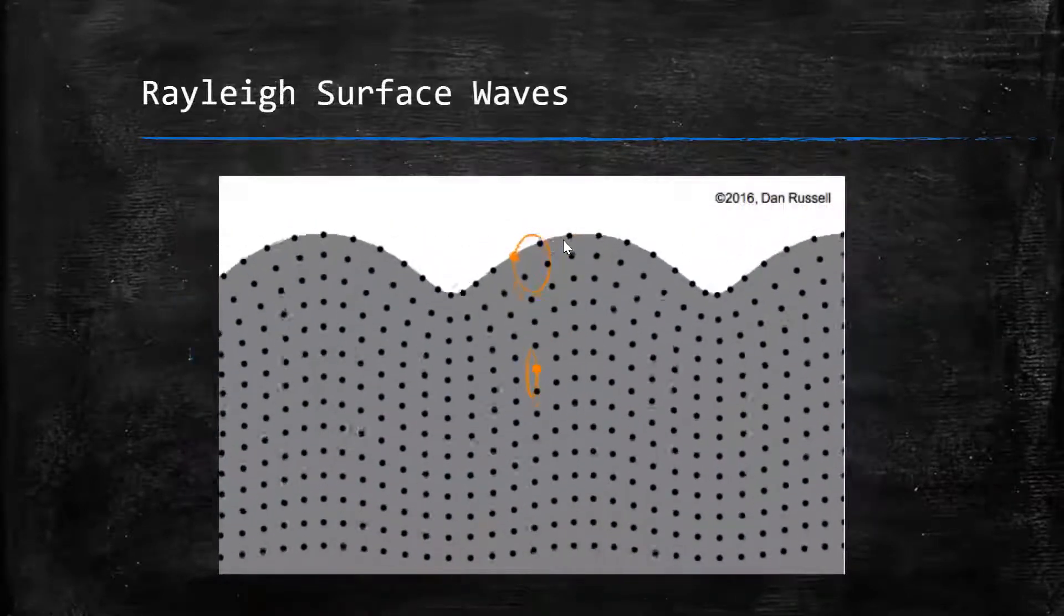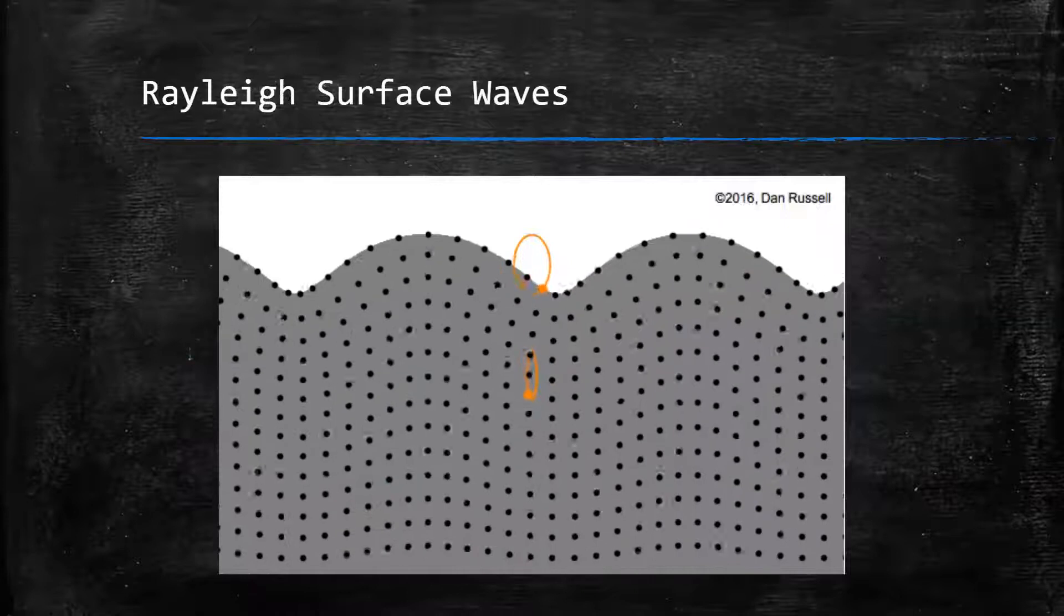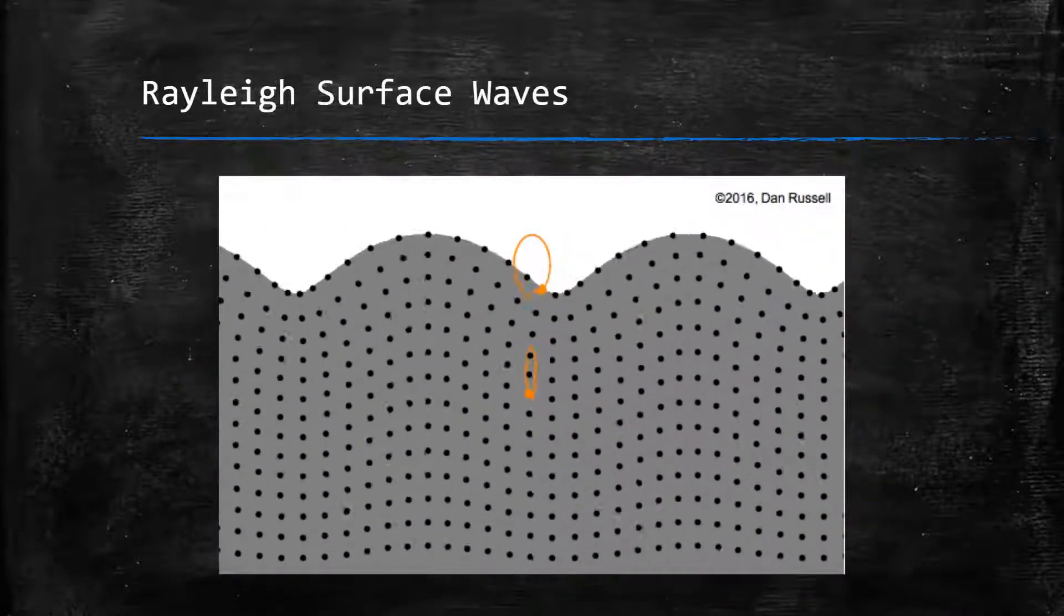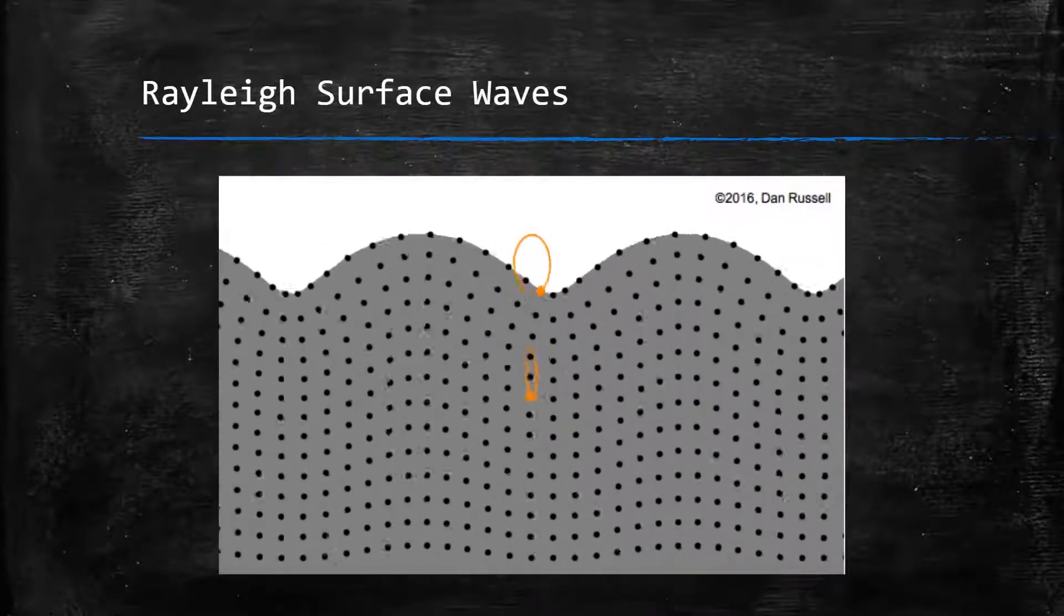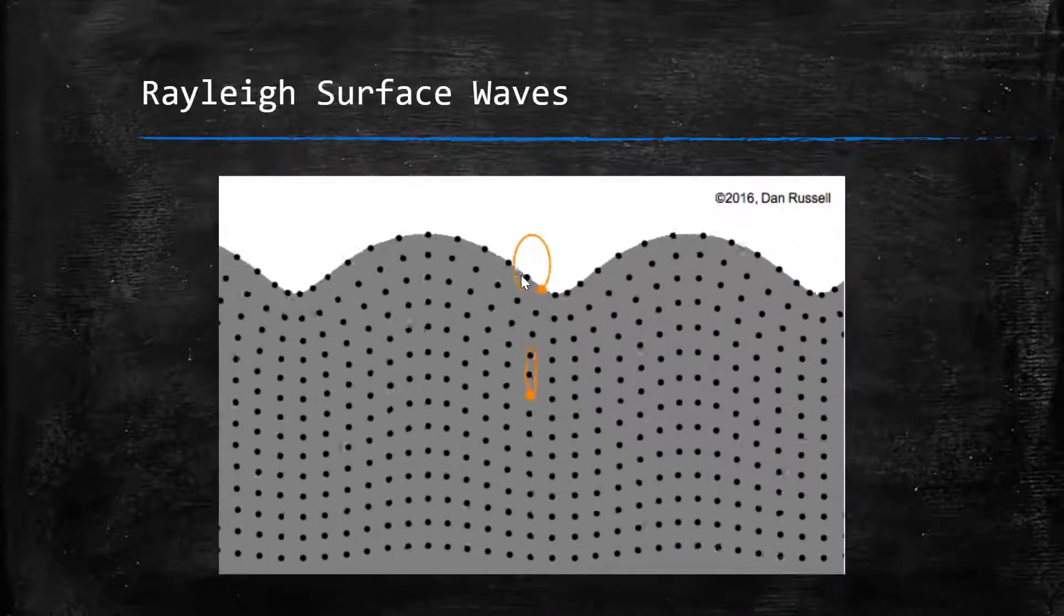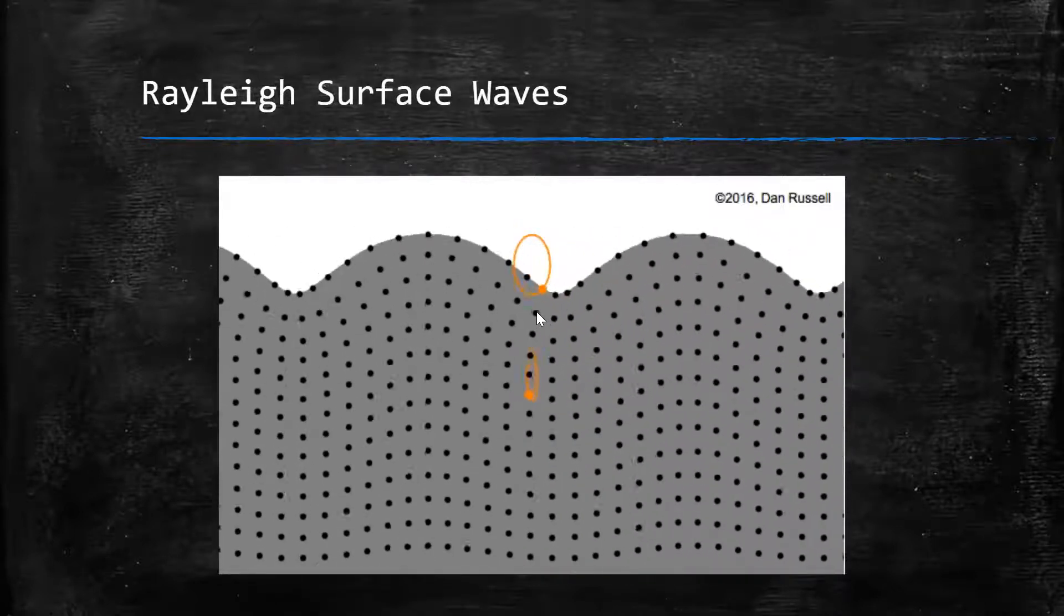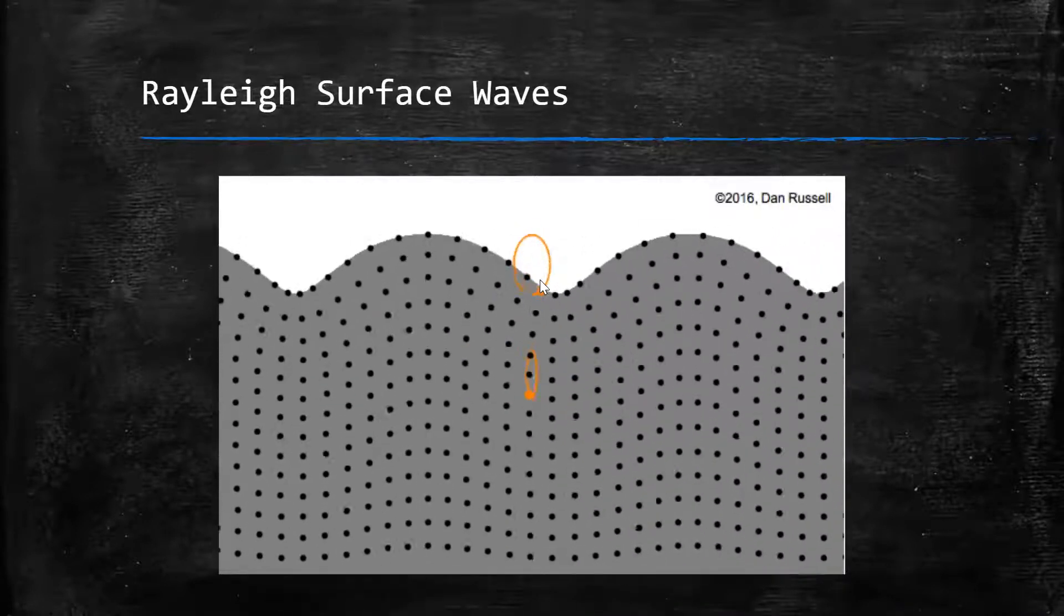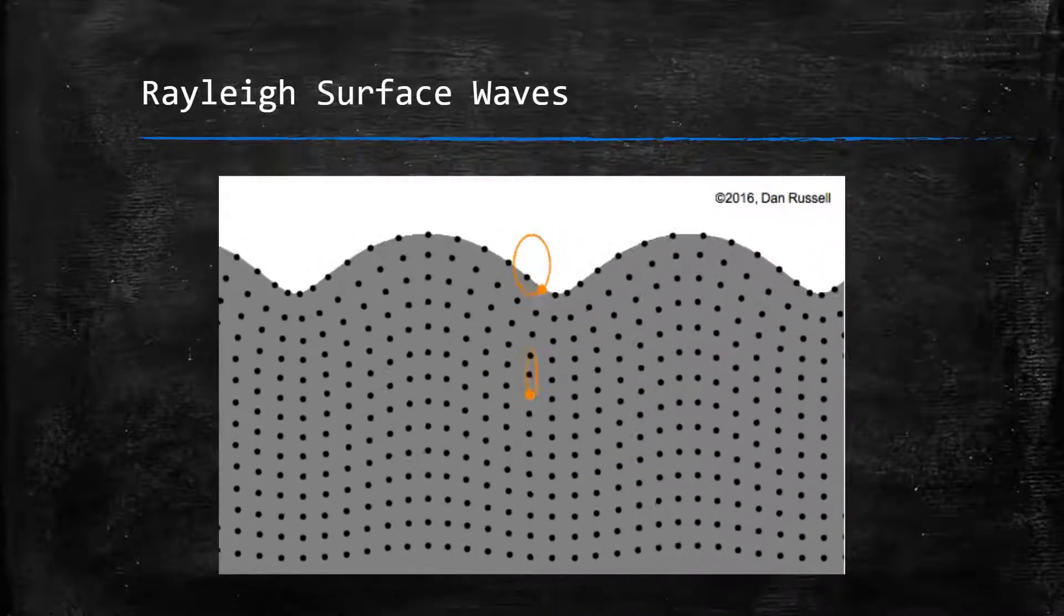And here we have another example of waves with both longitudinal and transverse motion, maybe found. It is called Rayleigh surface waves which are found in solids. The particles in a solid through which a Rayleigh surface wave passes move in elliptical shapes with the major axis of the ellipse perpendicular to the surface of the solid. As the depth into the solid increases, the width of the elliptical path decreases.